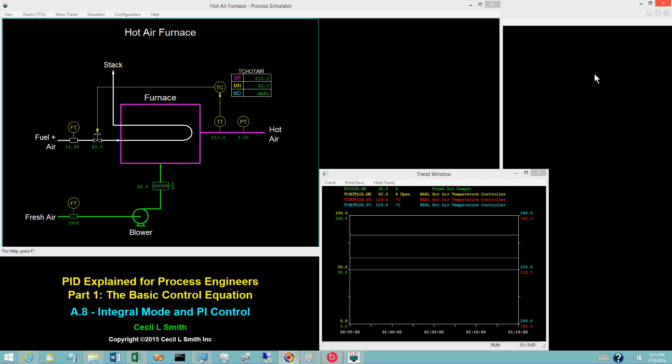The PID blocks in divisional controls provide all three modes. When a conscious decision has been made to not use the derivative mode, the designation PI is commonly applied.